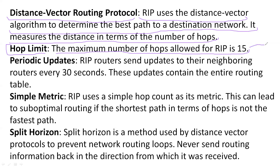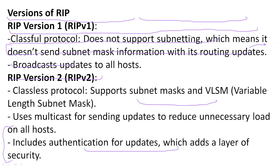After 15 routers in series, data cannot be forwarded. Periodic updates mean routers share update messages every 30 seconds. RIP uses a simple metric based on hop count to select the best path. The split horizon rule is a method to prevent loop formation on Layer 3 networks.